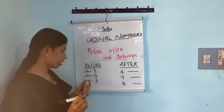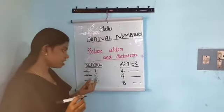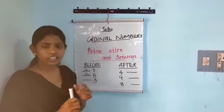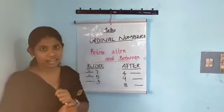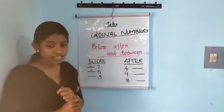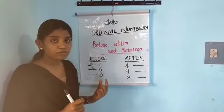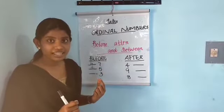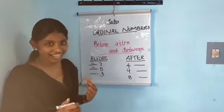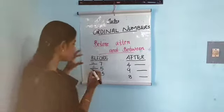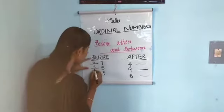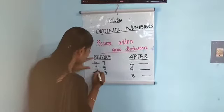Last 'before' example: there is a blank and then three. What number comes before three? The answer is two. Very good!